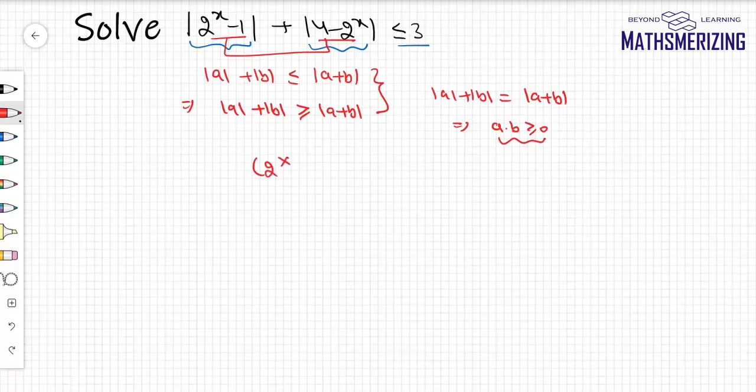So that means here I'll get this condition as (2^x - 1) times (4 - 2^x), and this should be greater than or equal to 0.